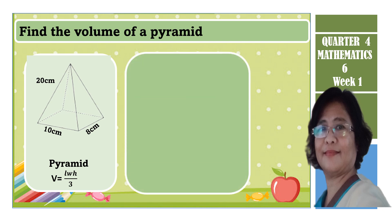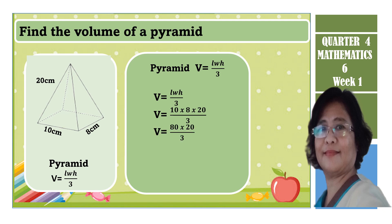Let us substitute the formula with the given numbers. Volume = length × width × height ÷ 3, so Volume = 10 × 8 × 20 ÷ 3. Multiply 10 times 8 to get 80, times 20 gives 1,600, divided by 3. Therefore, the volume of this pyramid equals 533.33 cm cubed.